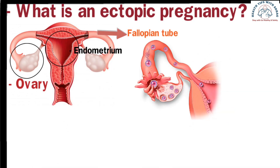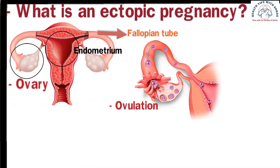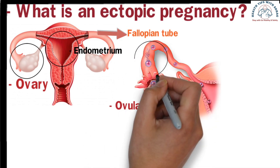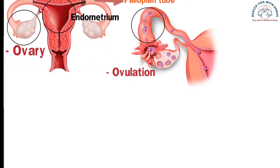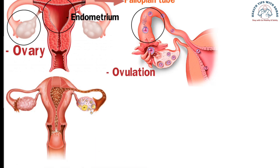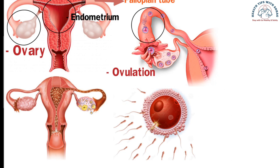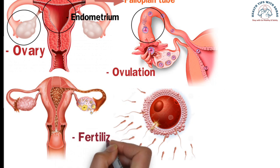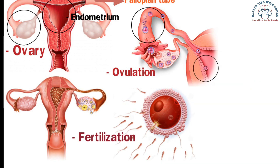Typically, during a certain time each month, women undergo ovulation. During ovulation, an egg is released from the ovary and remains in the fallopian tube, ready for fertilization. If intercourse happens during this time, the egg in the fallopian tube meets the sperm from the male — a process known as fertilization. This fertilized egg, or embryo, travels from the fallopian tube and implants itself in the endometrium inside the uterus.